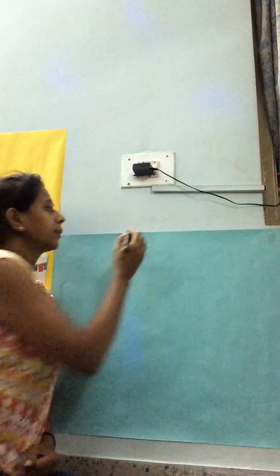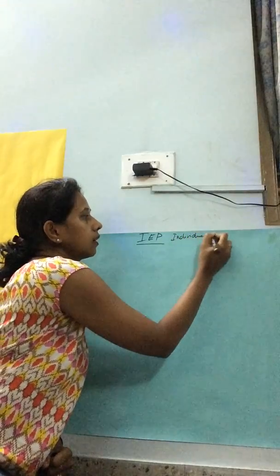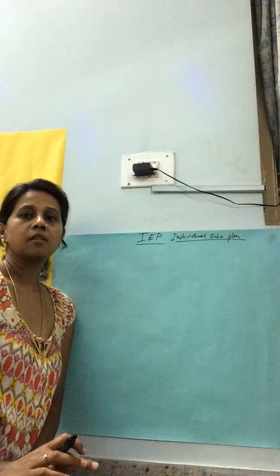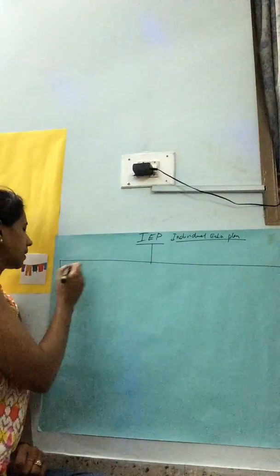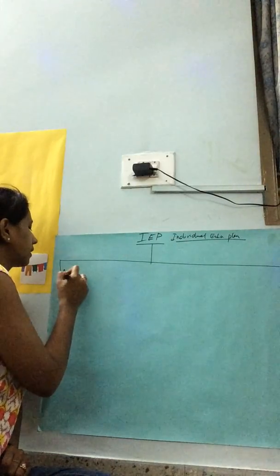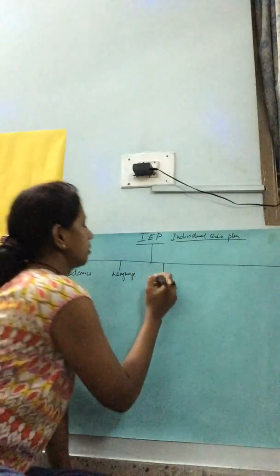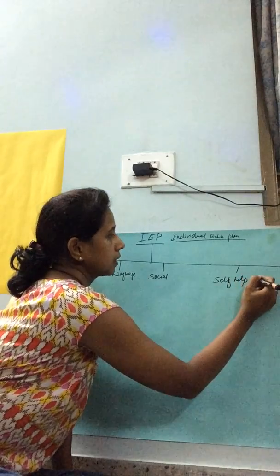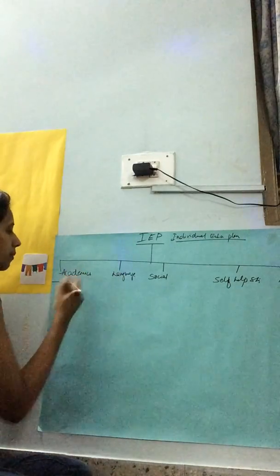Hi Rajni, good evening. Let's get started quickly. We will talk about IEP — Individual Education Plan. There are various components under an IEP. At a high level, the categories are: academics, language, social skills, self-help skills, and behavior.